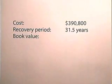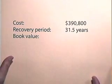Now let's find the depreciation and book value. We have a thirty-one and a half year property whose cost is $390,800. We want to find the book value at the end of three years and we're going to round to the nearest dollar. In order to find the amount of depreciation for this property, we're going to have to go to the table.